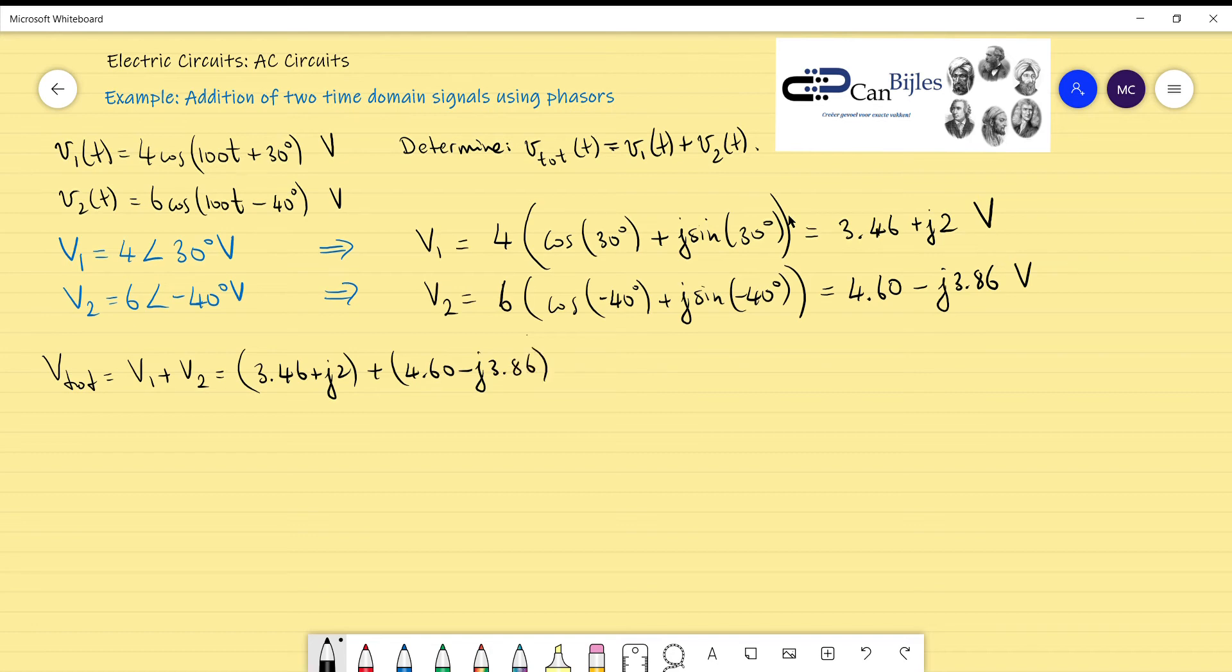What you can do here very easily is you count the real parts—that's the real part for V1 and real part for V2—and you count the imaginary parts. So imaginary part for V1 and imaginary part for V2. What you get is I will do that in parentheses.